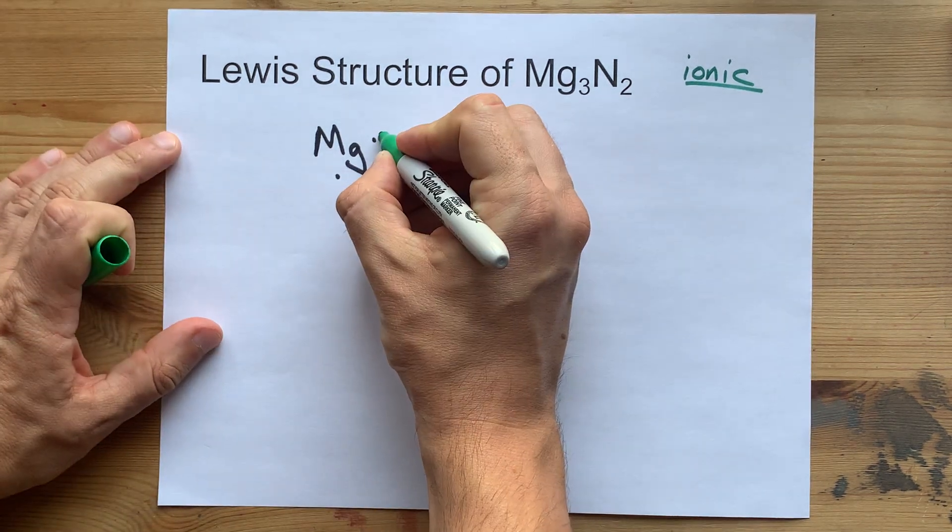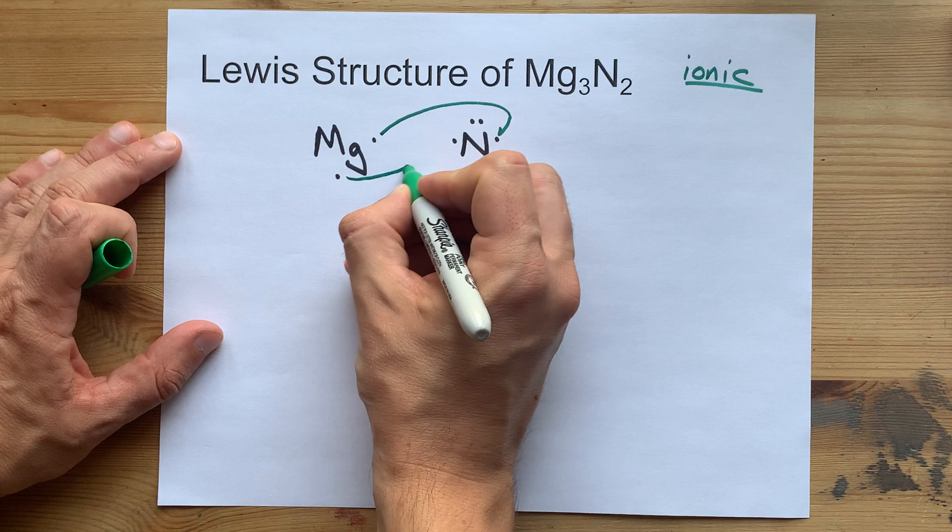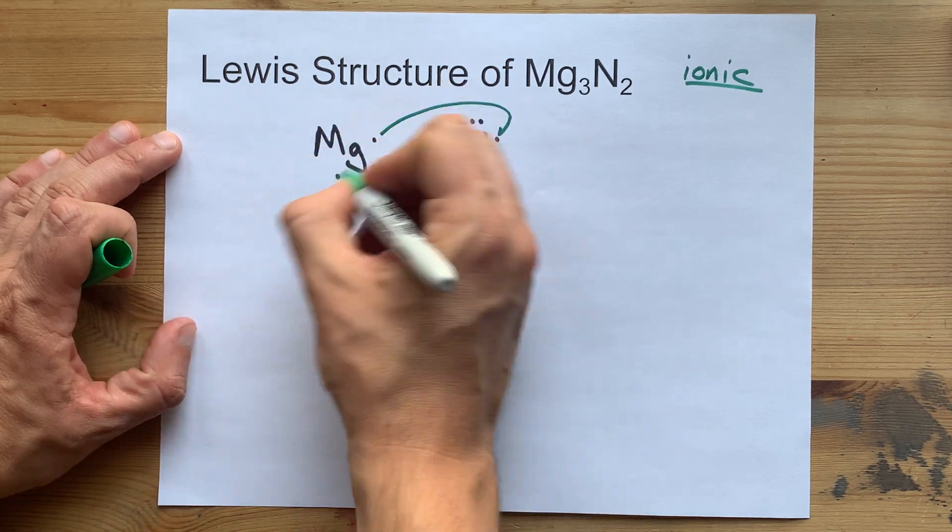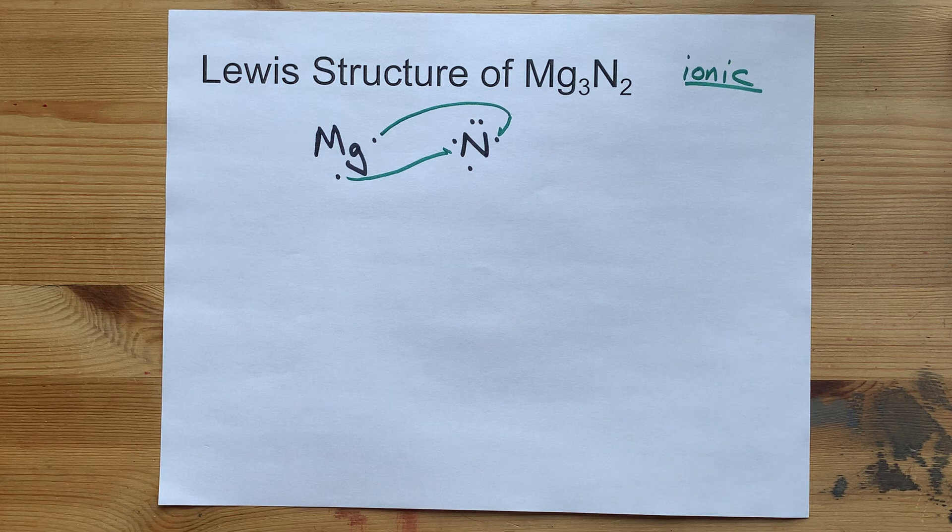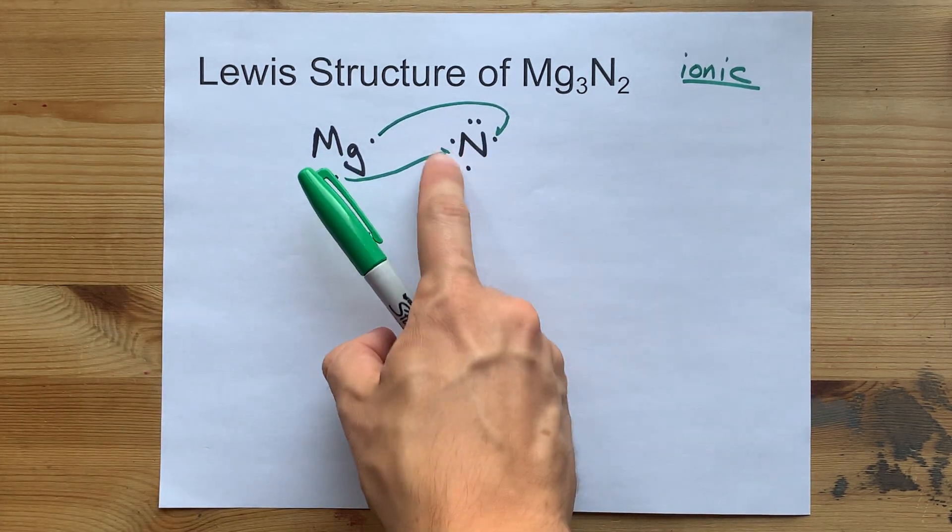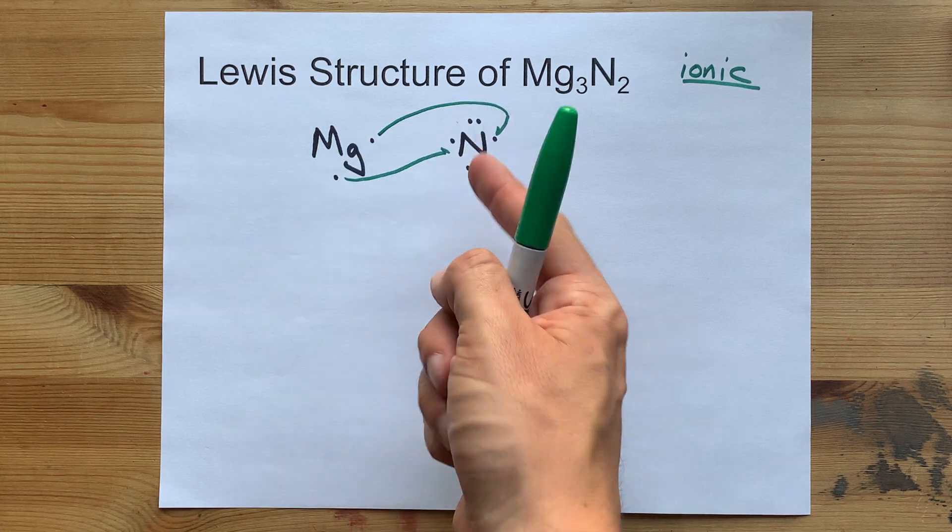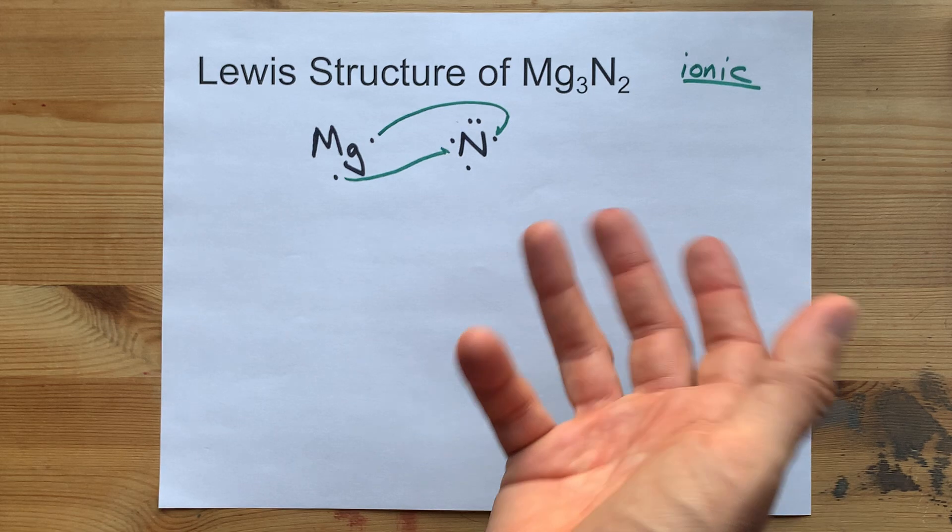So, that electron from magnesium is going to get paired up somewhere. This electron gets paired up somewhere. That magnesium is now happy because he's given away all his electrons. But that nitrogen is not happy. He brought 5 and gained 2, that's 7 electrons. He wants 8. That's why it's called the octet rule.